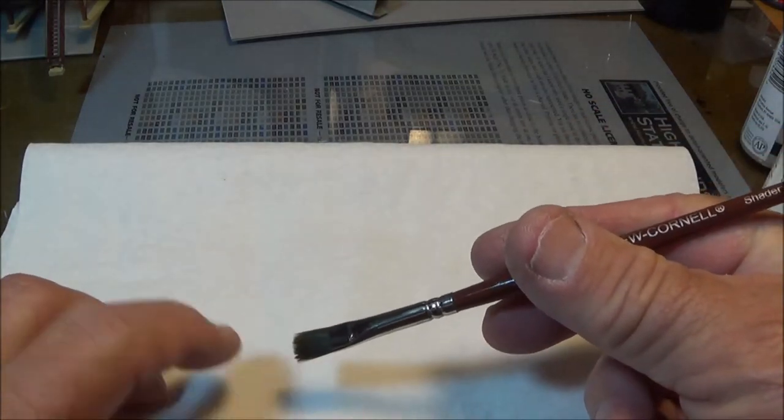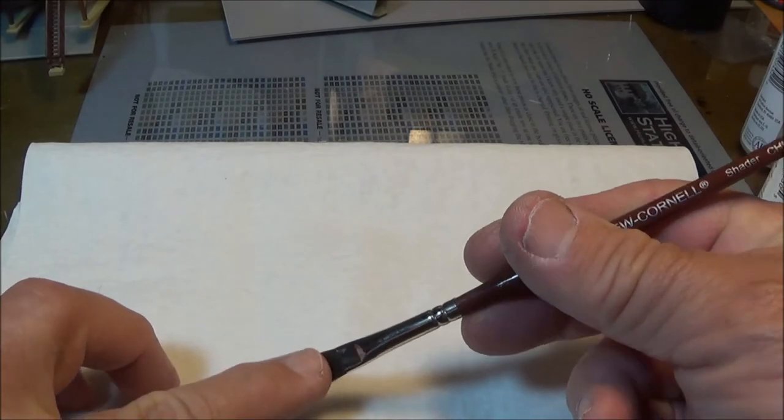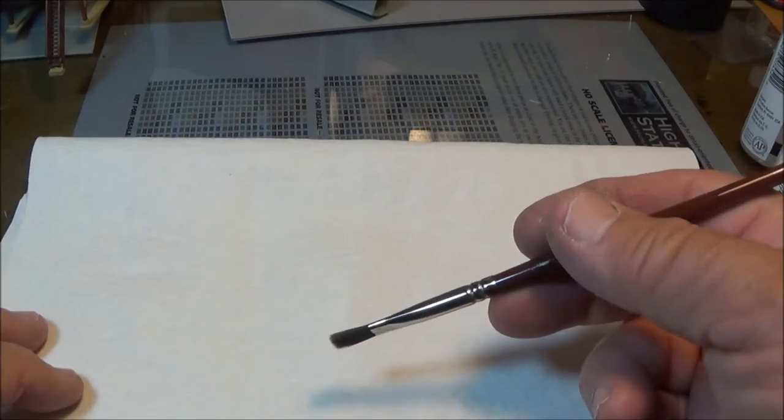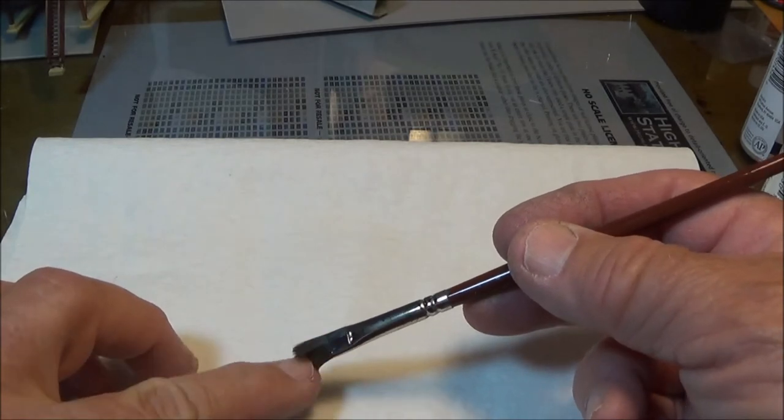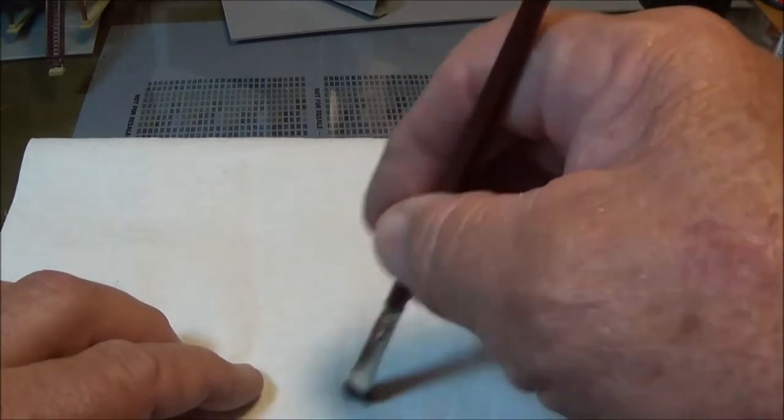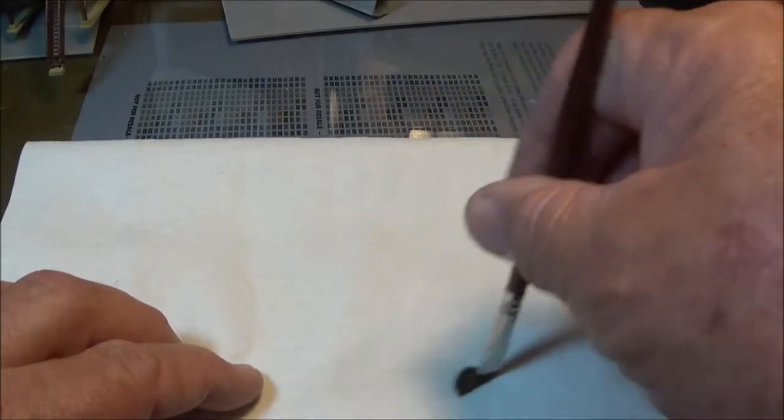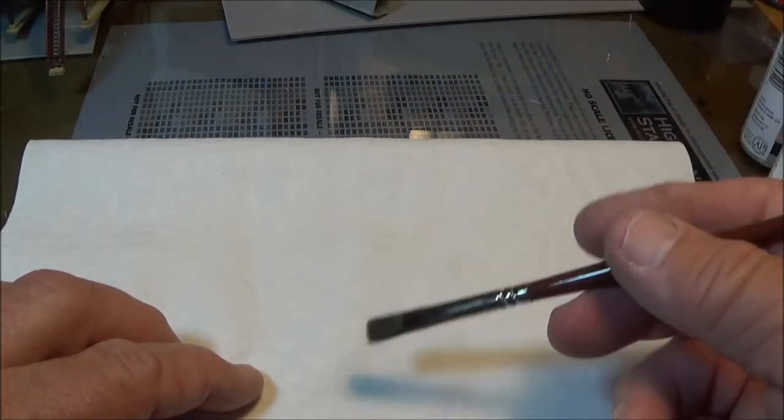Dry brushing is basically a technique of putting, I prefer acrylic paint, you can put any kind of paint you want to do dry brushing with, but I prefer acrylic. And what you do is put it on the brush and then wipe the brush off until there's hardly anything, if anything, coming off the brush.